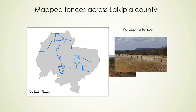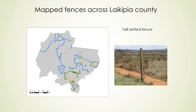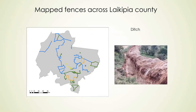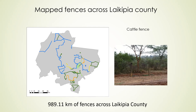Our first step was to map fences within Laikipia and identify what types of fences exist. One of the key fences is the porcupine fence. We also identified tall fences, tall netted fences that don't allow even small animals to cross, ditches within the county, and cutoff fences used for paddocking in livestock production. In total, we mapped approximately a thousand kilometers of fences within the county.